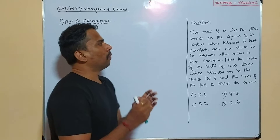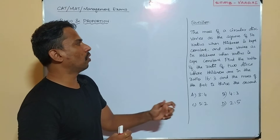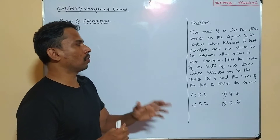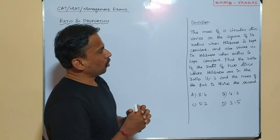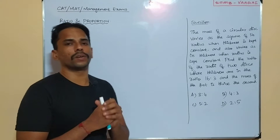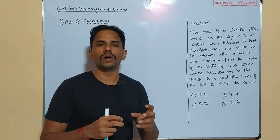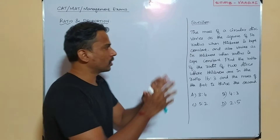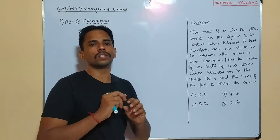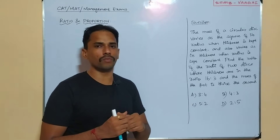Our question here is: the mass of a circular disk varies as the square of its radius when its thickness is kept constant, and also it varies as its thickness when the radius is kept constant. Clearly this question is based on the concept of variation. Let us clearly note down what are all the things which are given in the question. There is a circular disk and they are telling us a few things about its mass.